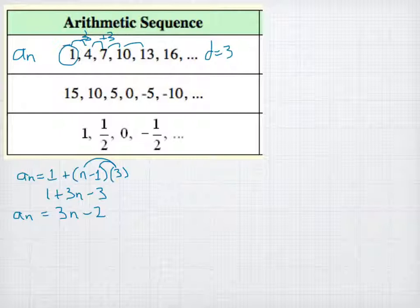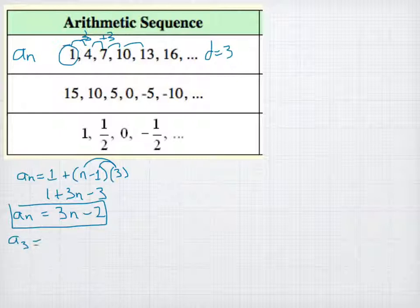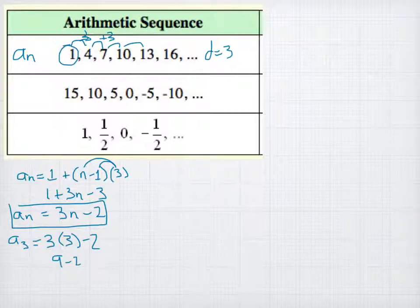We can check our formula by plugging in a term number. For the third term, plug in n equals 3: 3 times 3 minus 2 equals 9 minus 2 equals 7. Looking back at the sequence — 1, 4, 7 — our third term is indeed 7, confirming the formula is correct.